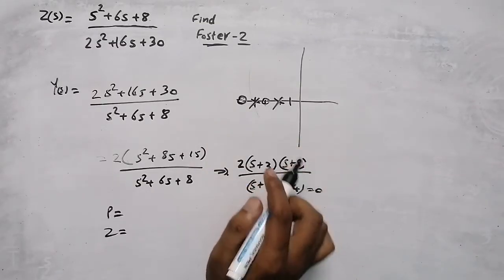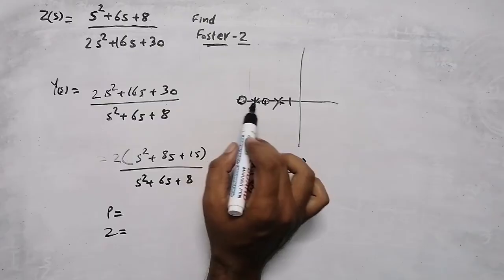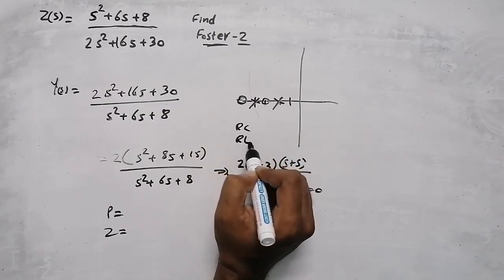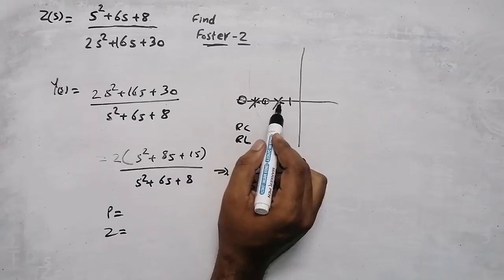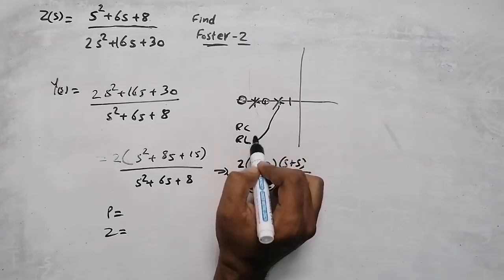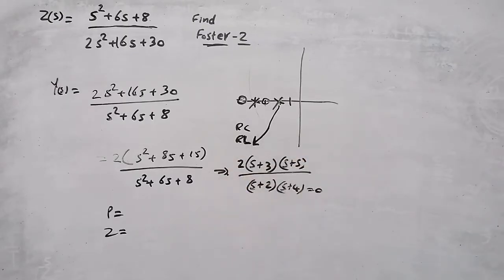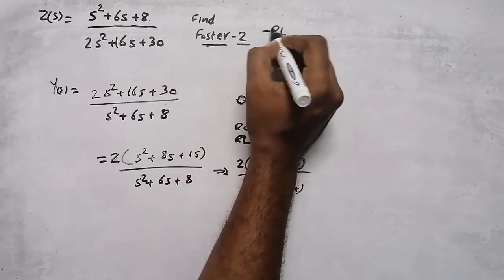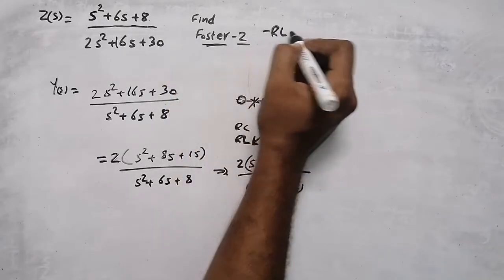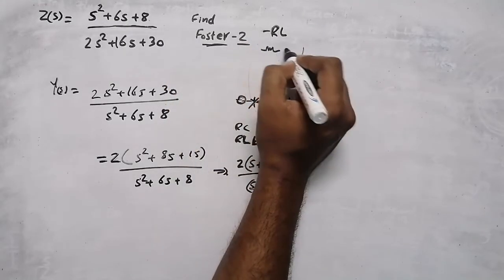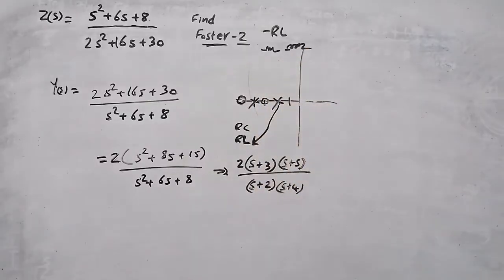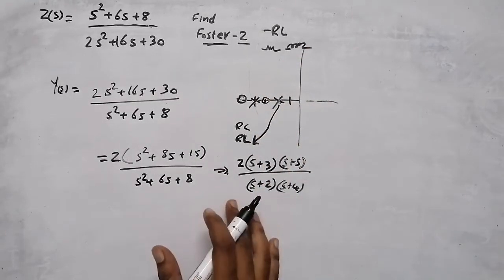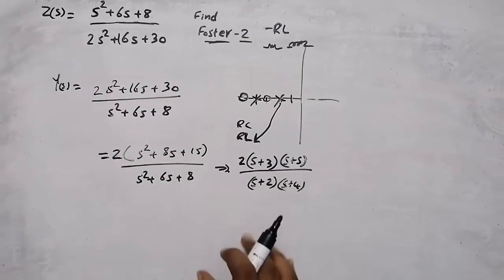Since poles and zeros lie on the negative real axis, it can be an RC or RL circuit. If the pole is at the beginning it is an RL circuit, so in this case it is an RL circuit — meaning resistor and inductor. Now after finding this, we need to do partial fractions.